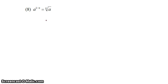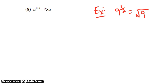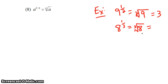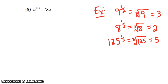A to the 1 over n power is equal to the nth root of a. For example, 9 to the 1 half power is equal to the square root of 9. When it's a square root, the 2 is assumed even if not written, and the square root of 9 is 3. 8 to the 1 third power is equal to the cube root of 8, which is 2, because 2 times 2 times 2 is 8. Or 125 to the 1 third power is equal to the cube root of 125, which is 5, because 5 times 5 times 5 is 125.